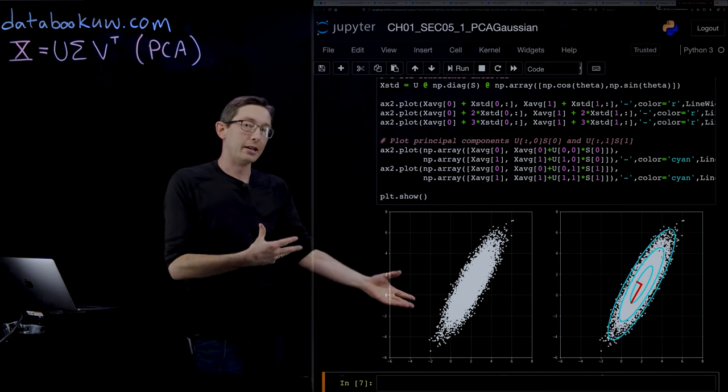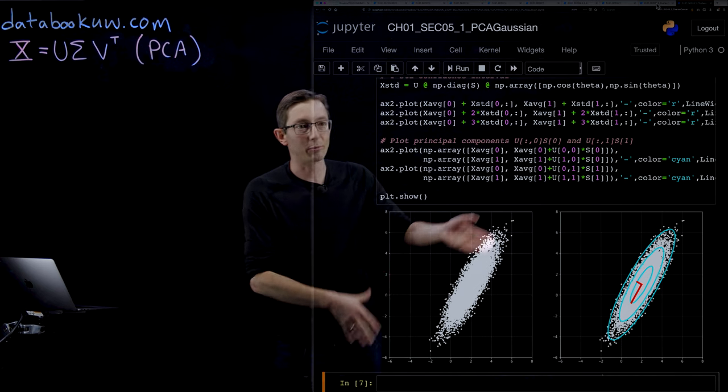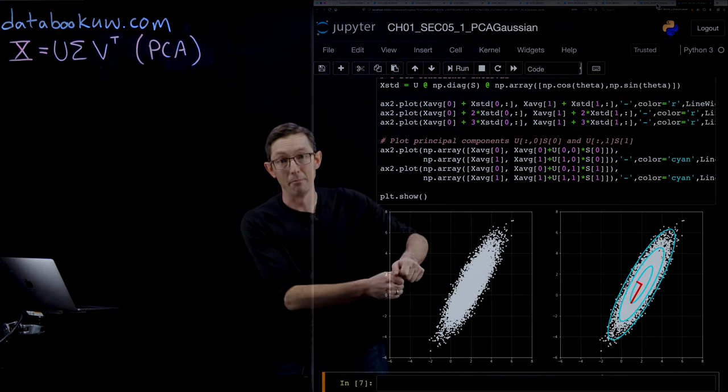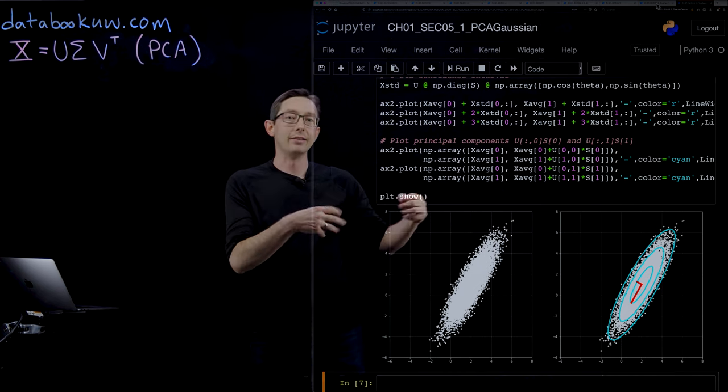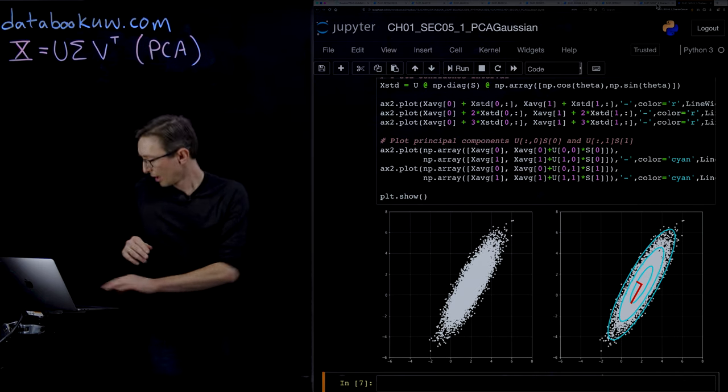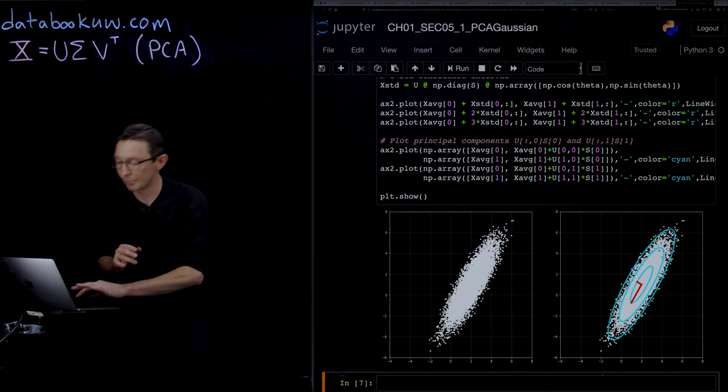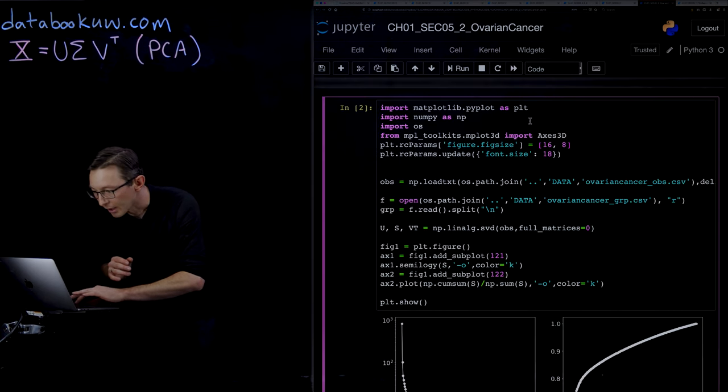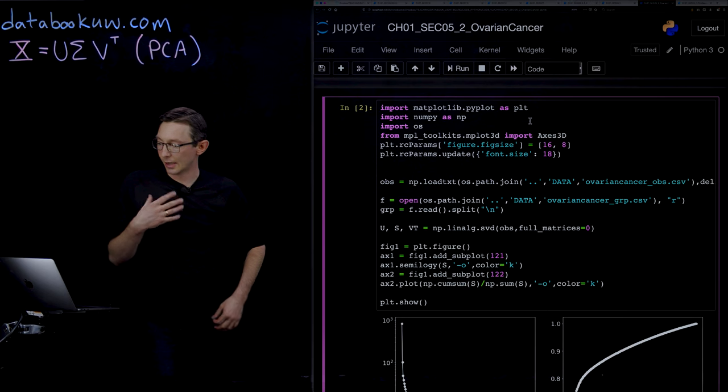You can decompose a data set into these principal component directions where you have the most variance in the data, and then hierarchically less and less variance. We tried it on this simple example where we know the answer, so now we're going to look at this other example that I like a lot.